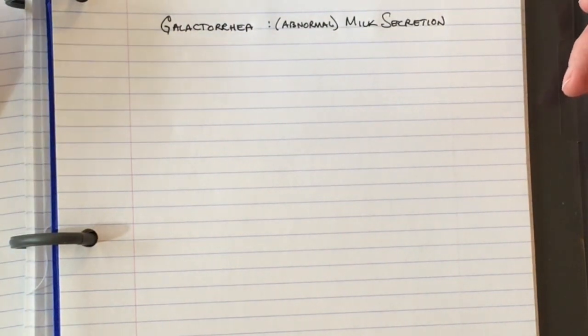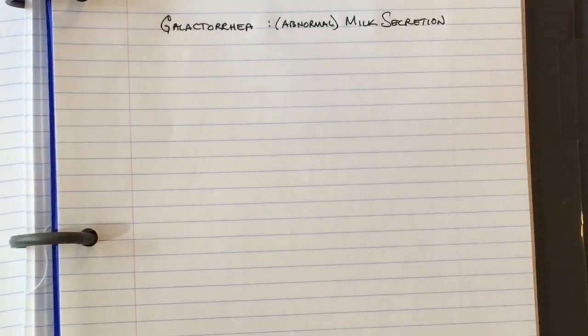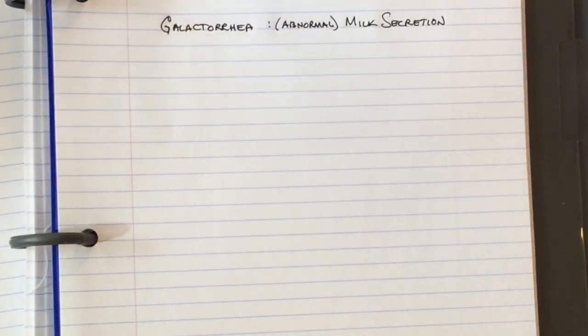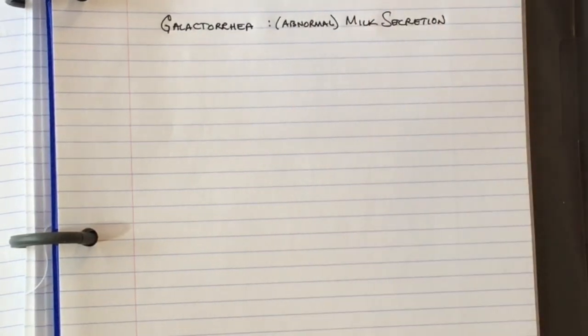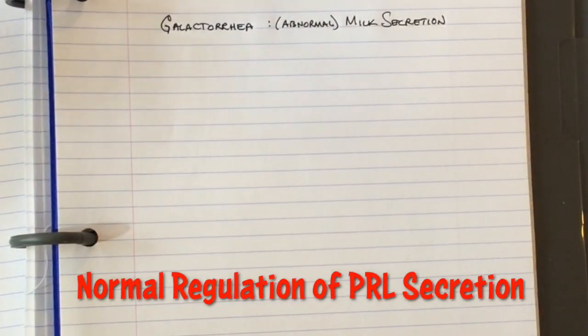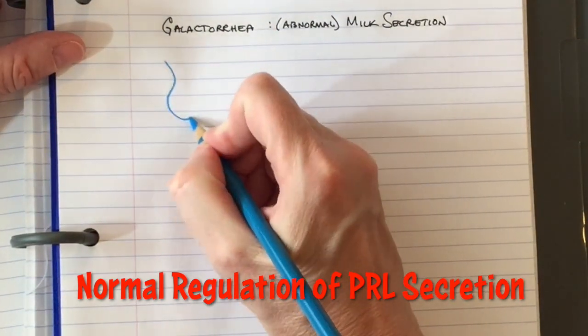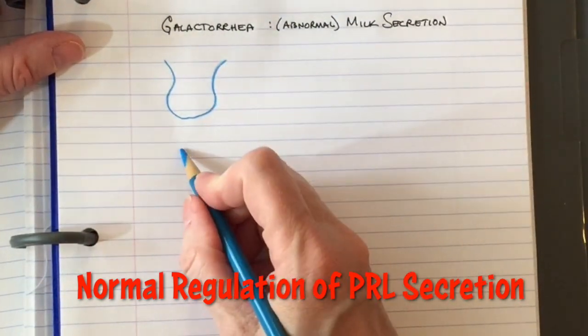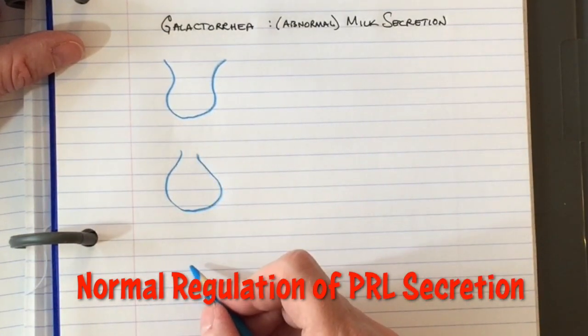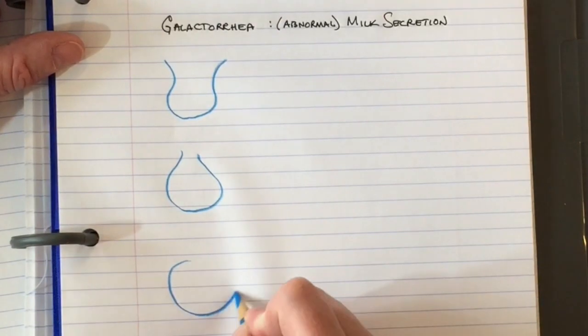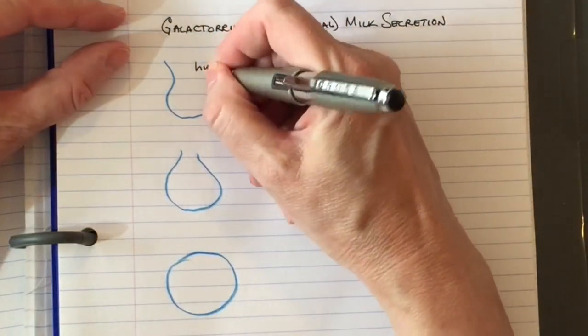This idea that you get galactorrhea with dopamine antagonists and why you don't get that with Parkinson's disease. First, let's talk about the normal physiology. These are not anatomically correct drawings, but you have the hypothalamus.